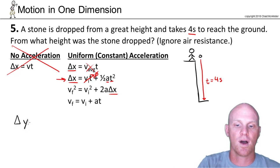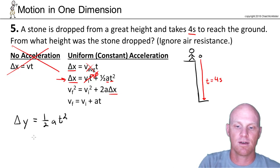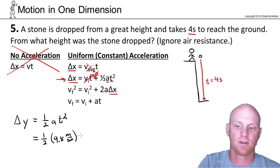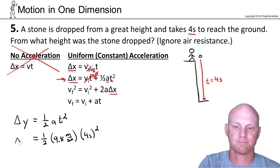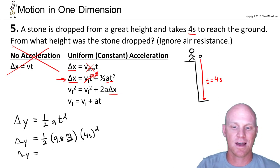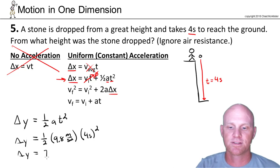I'll call it δy instead of δx, but this simplifies to δy = ½at². Plugging in: one-half times 9.8 meters per second squared times t squared, where t is 4 seconds. So 4 squared is 16, times 9.8 — or equivalently 8 times 9.8 — which gives us 78.4 meters.